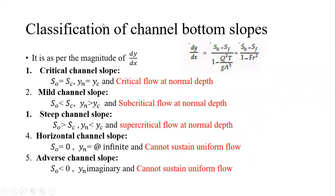In summary, channel slopes are categorized into five types: critical, mild, steep, horizontal, and adverse. Horizontal and adverse slopes cannot sustain uniform flow. For critical slope, normal flow occurs at critical depth. For mild slope, subcritical flow occurs at normal depth. For steep slope, supercritical flow occurs at normal depth.